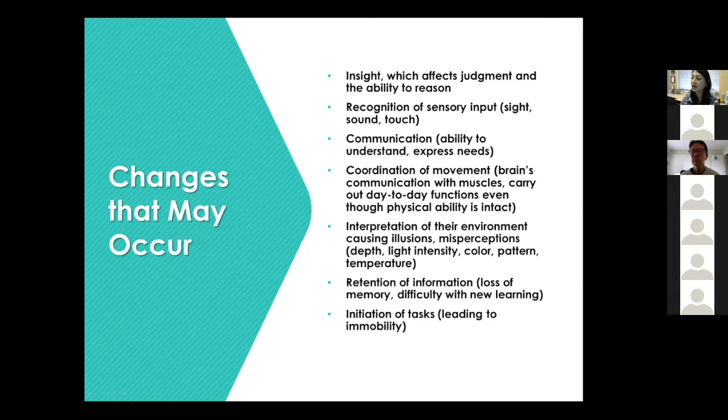Retention of information, the loss of memory, and then having difficulty learning new things. As we age, we all have difficulty learning new things, but we can grasp it. With given enough time and our own learning abilities, we can usually grasp it. A person with dementia has a great deal of difficulty. They may follow their instructions once, but they may not be able to repeat it. And then the initiation of tasks leading to immobility. And they don't know how to initiate anything without you prompting them first.